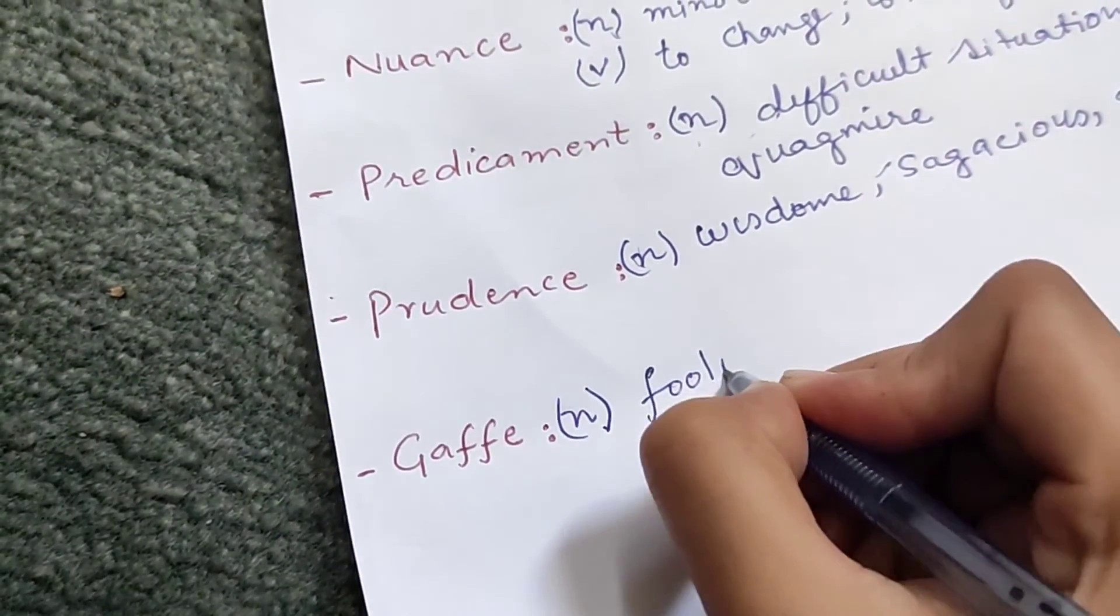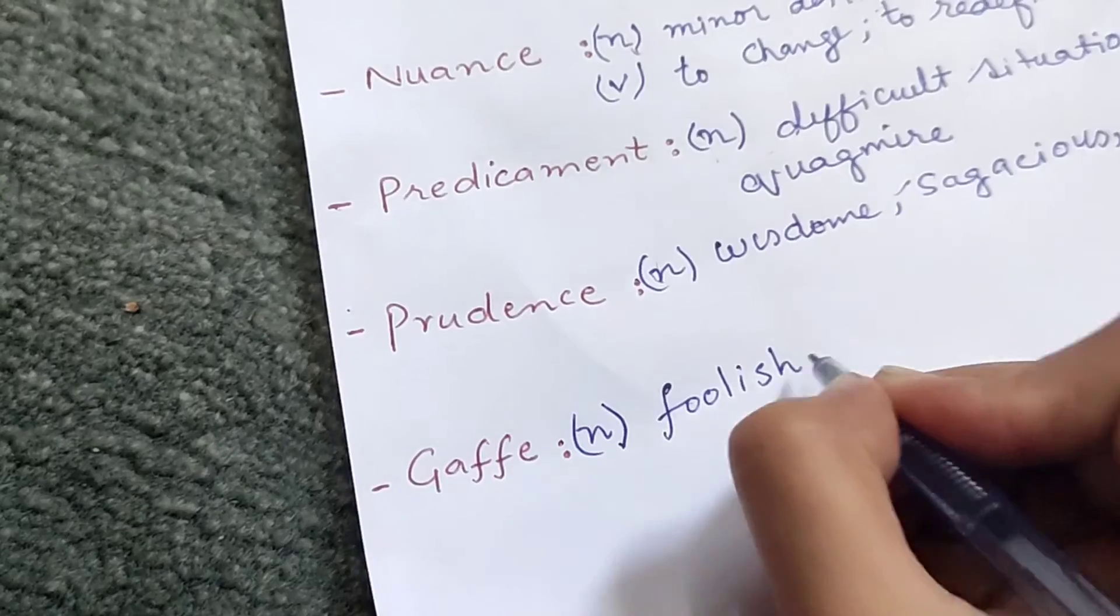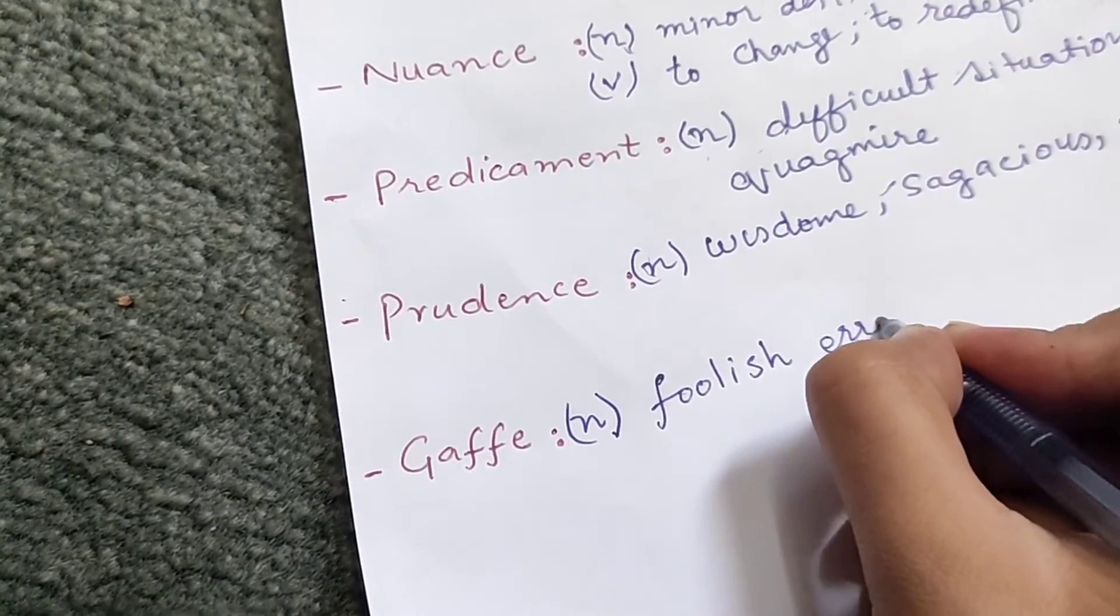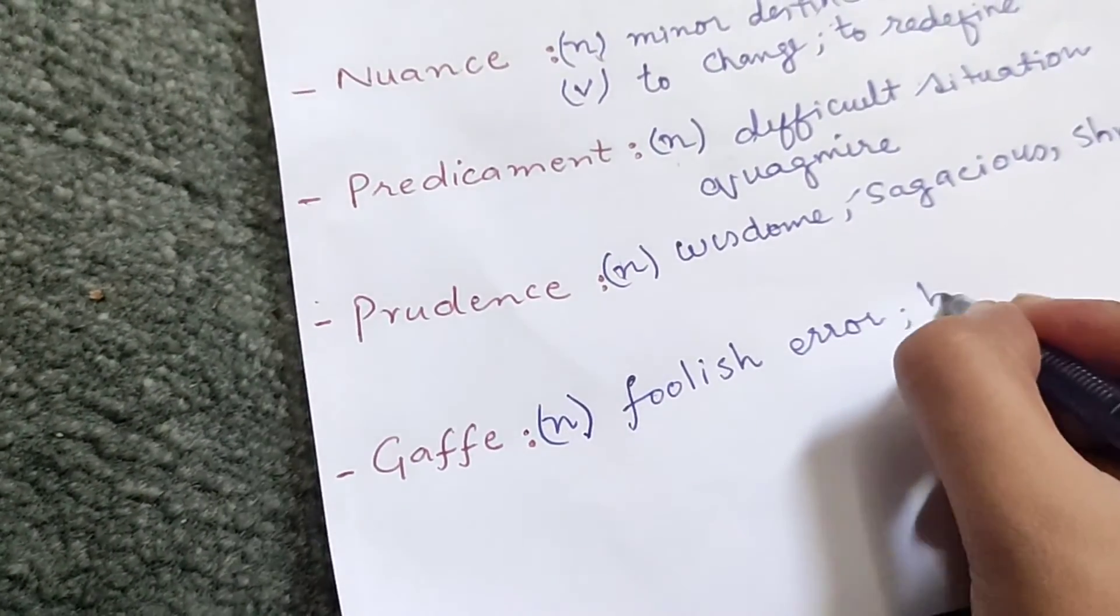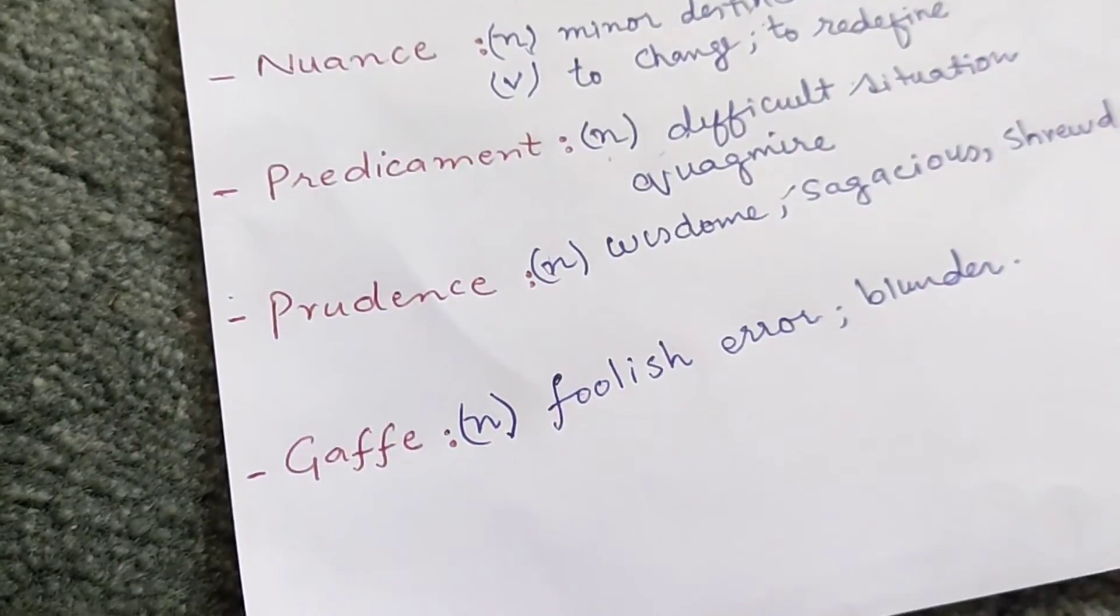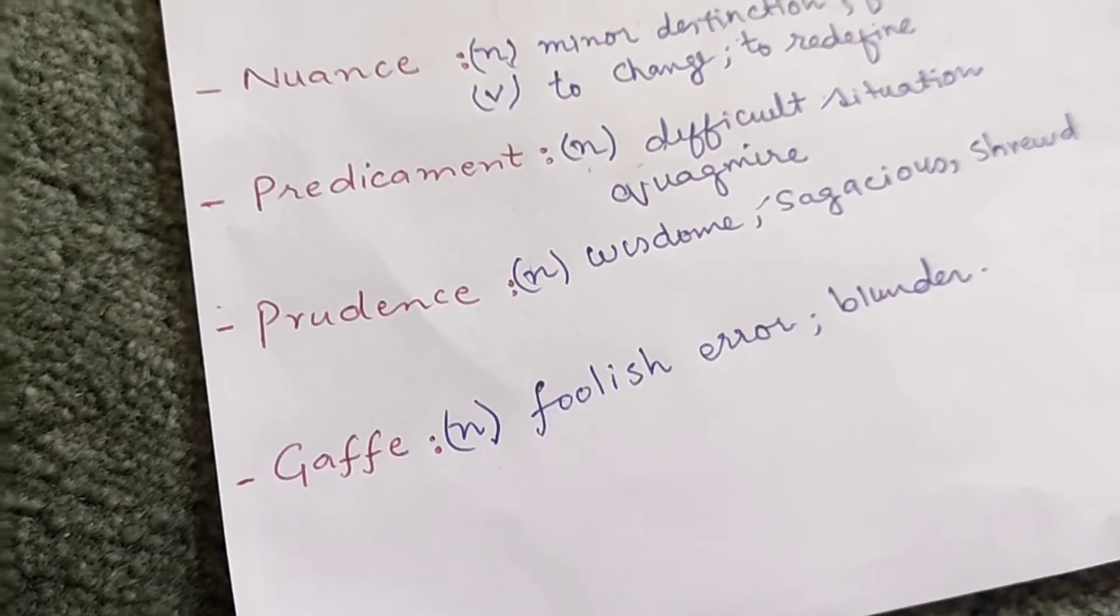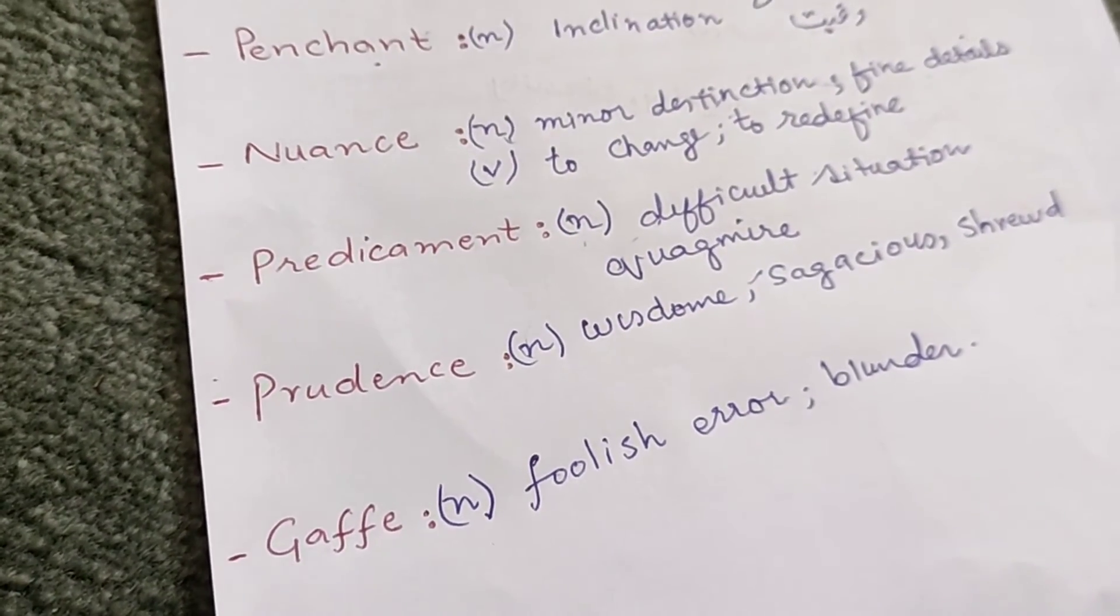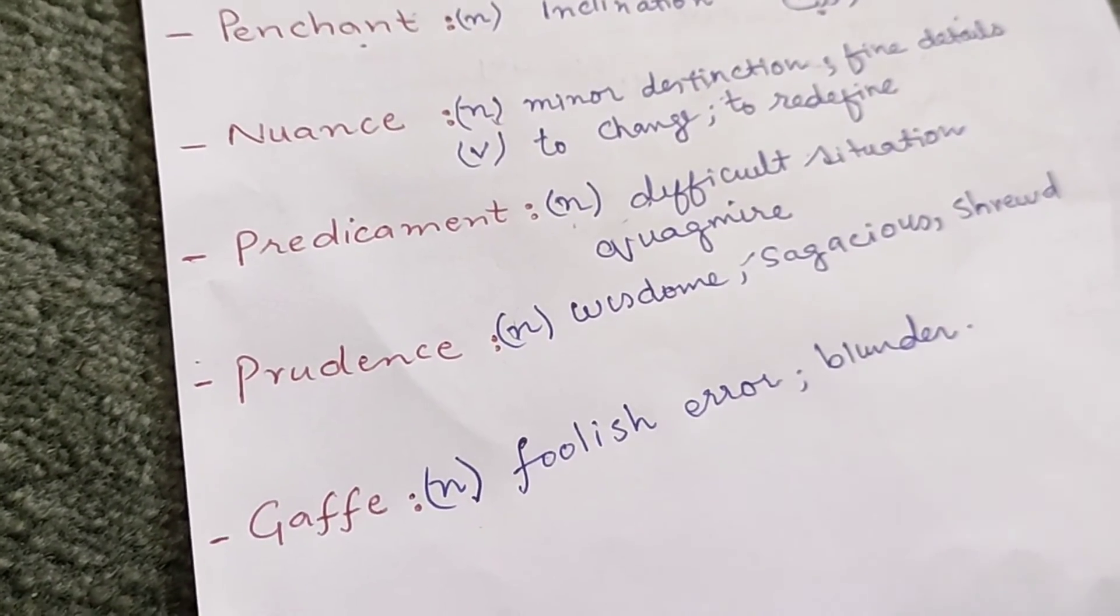Shrewd. The fifth word is gaffe, which means error or you can say blunder. So these are the five words which I think I should share with you.